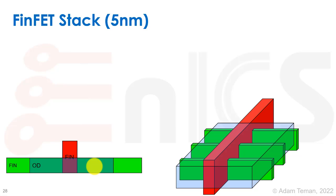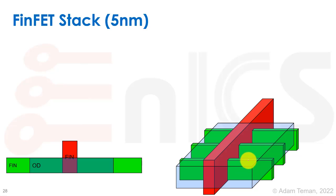What we do then is mark our OD layer. Our OD layer is actually saying where we are going to build the epi. We define this whole area as a transistor with three fins on it, so we can build our epi and actually short between these fins. We don't care about them being shorted together because they're going to be the same type of transistor. This is how we mark our OD on top of the whole transistor definition.